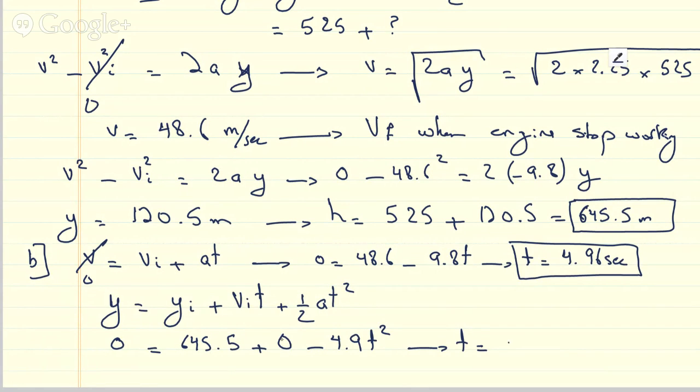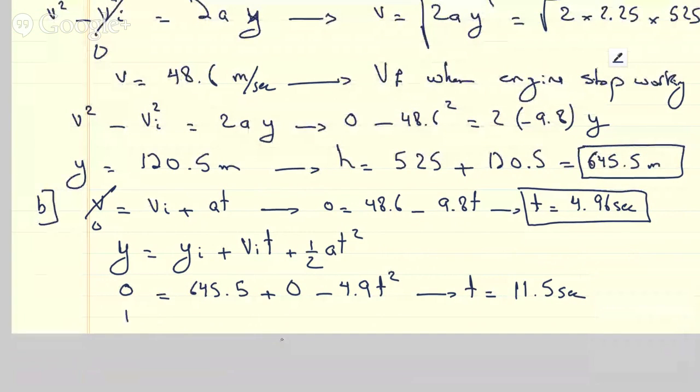So we can solve this T to be 645 divided by 4.9 and then take the square root of that. So that takes 11.5 seconds to get from the top to the ground and it takes 4.96 seconds to get from where the engines fail to the top. So that means the total time will be the sum of these two times. So T total will equal to 4.96 plus 11.5, which is 16.4 seconds.